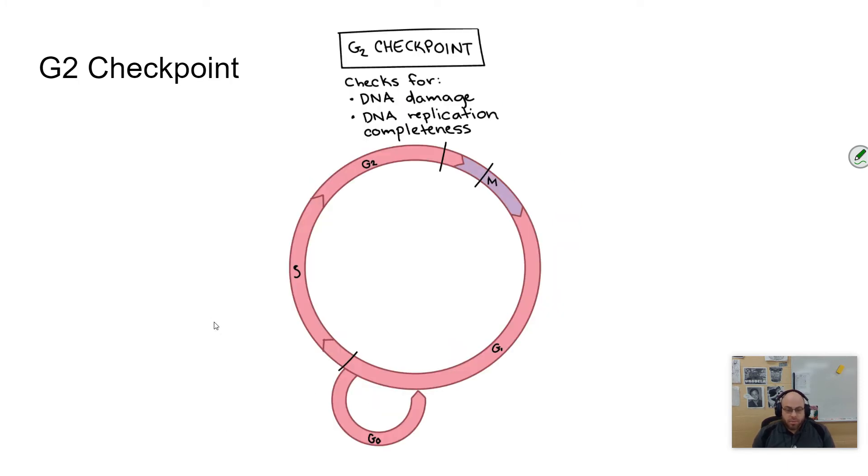Next is the G2 checkpoint, which happens at the end of the G2 phase. It checks DNA replication: Is DNA replication complete? Is there any DNA damage? If there's DNA damage or replication is not complete, it doesn't make sense for the cell to divide. DNA damage can cause a faulty cell, which wastes energy and time. This checkpoint ensures everything is ready for division. This is the last checkpoint right before M phase begins, which is mitosis and cytokinesis.